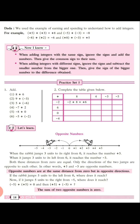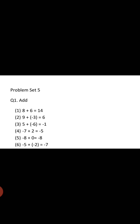You might feel a little confused right now, but once you start solving the exercise, you are going to enjoy it and it is going to be really simple. Practice Set 5, Question 1. Add: 8 plus 6 equals 14. Next, 9 plus minus 3: 9 has no sign so it's positive, 3 is negative — different signs, subtract. 9 minus 3 is 6, and 9 is greater with a positive sign, so the answer is positive 6.